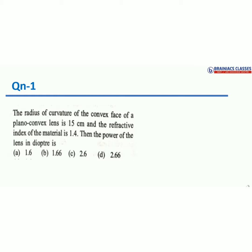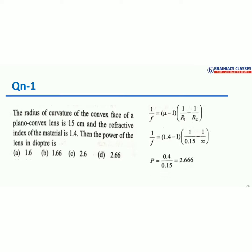If I take R1 = 15 cm, then R2 is my plane surface which is infinity. Let's assume the left side surface is convex and the right side surface is plane. Applying the lens formula: 1/f = (μ − 1)(1/R1 − 1/R2). Left side is convex so R1 = +15 cm, R2 = infinity, μ = 1.4. Substituting all values, we get power = 2.66 diopters, so the answer is option D.